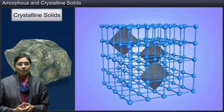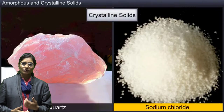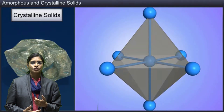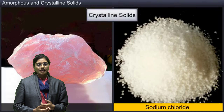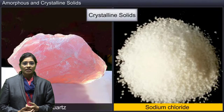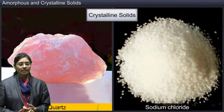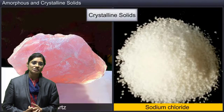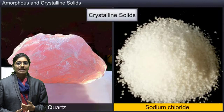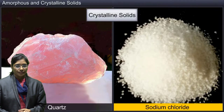For example, sodium chloride, diamond, graphite and sugar. In sodium chloride, the salt has a particular arrangement of particles. In diamond we can see the arrangement of molecules in a particular order, and the same can be seen in sugar and graphite also.